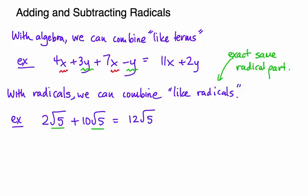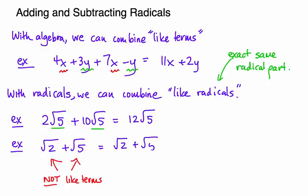Very similar to what we see in algebra with like terms. If you have the square root of 2 plus the square root of 5, these are not like terms because those radical parts are different, and so they cannot be simplified. We just write the same answer out again.